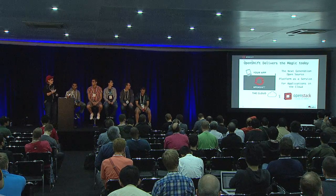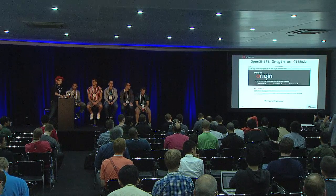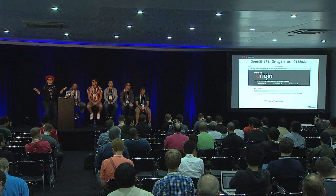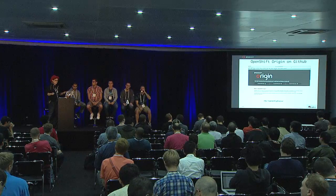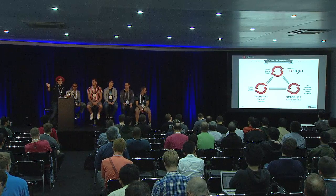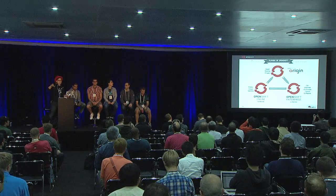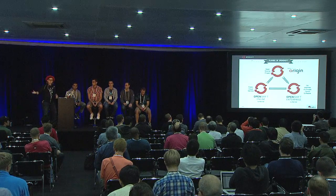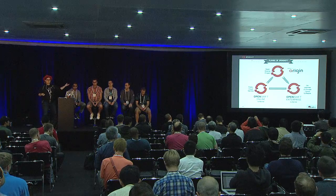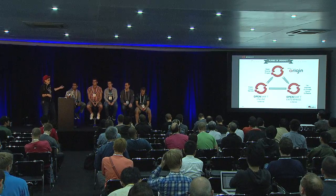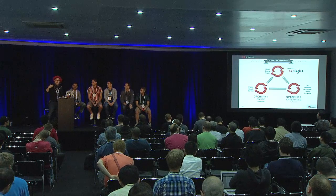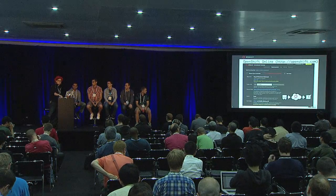OpenShift delivers that magic today. We're delivering it on OpenStack, on Bare Metal, and on AWS — it's Apache V2 licensed. All of the source code is out there on GitHub. If you want to fork it, work with us, collaborate on it, we would love to have you. The Origin project, which I'm the community manager for, is what upstream feeds OpenShift Online and our enterprise offering. Every three months we get a new release cycle, so we're really rapidly iterating.